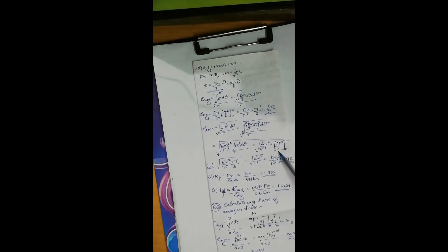Theta square d theta becomes theta cube by 3, and applying the limits from 0 to pi, it becomes pi cube by 3. So overall, we will obtain Em by root 3.